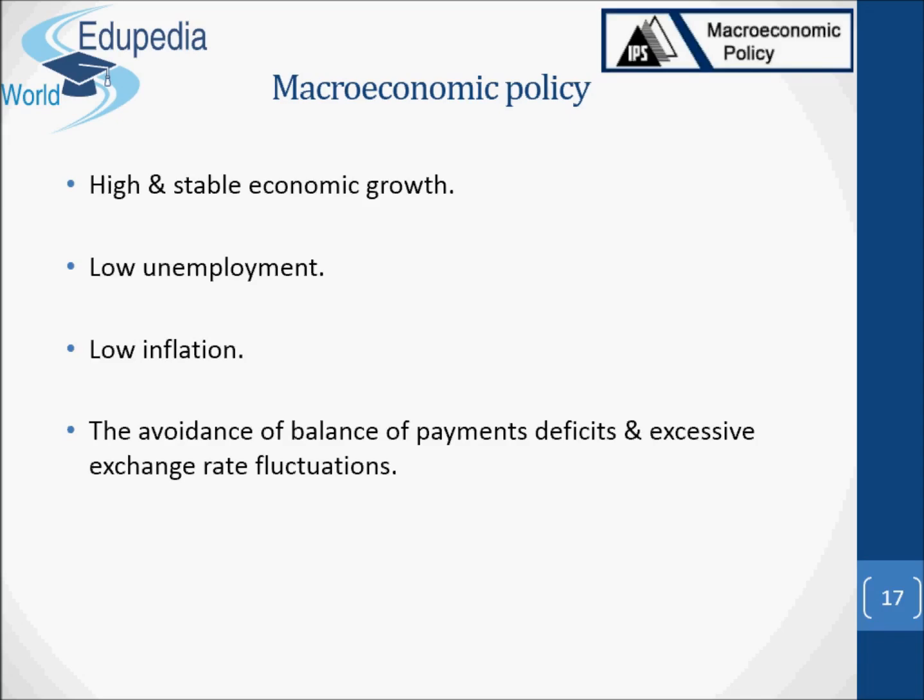For example, the goal of faster growth may conflict with that of greater equality. The goal of lower unemployment may conflict with that of lower inflation, at least in the short run. This is an example of opportunity cost. The cost of achieving one objective may be achieving less of another. The existence of trade-offs means that policymakers must make choices.